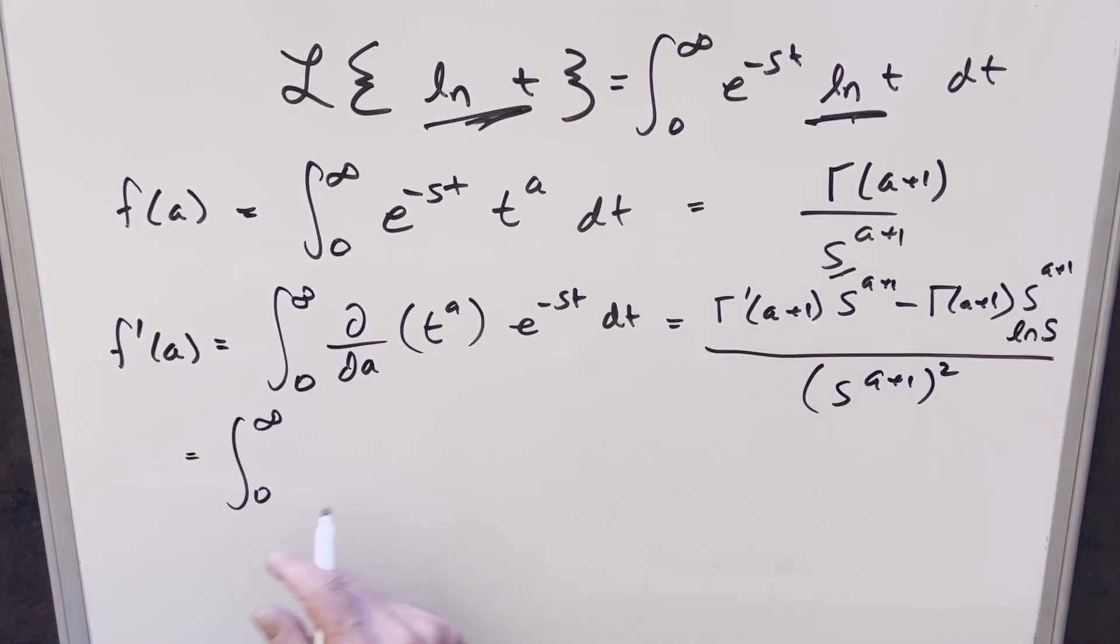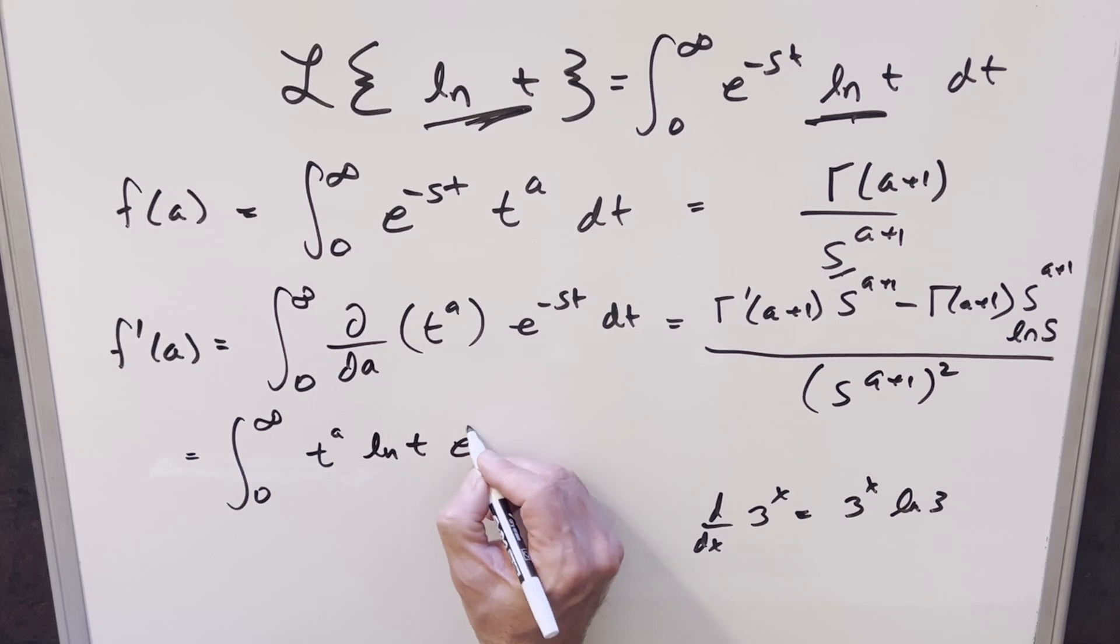Then for the derivative here with respect to a, t is just a constant. So this is going to be the same thing as like when we get the derivative of 3 to the x. When you do this, you just get 3 to the x ln 3, or whatever constant base you want to choose there. So doing the same kind of thing here, we get t to the a ln t e minus st dt.